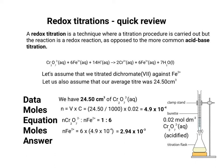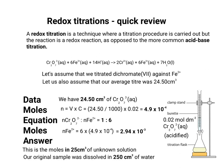Remember that this is the number of moles of iron 2+ contained in one 25 cm³ sample that we titrated. The original sample was dissolved in 250 cm³ of water, so to get the moles of Fe²⁺ in the original sample, we multiply 2.94 × 10⁻³ by 10 — because 25 cm³ goes into 250 cm³ ten times — giving 2.94 × 10⁻² moles.